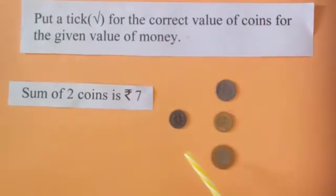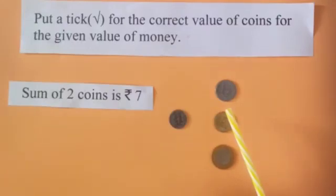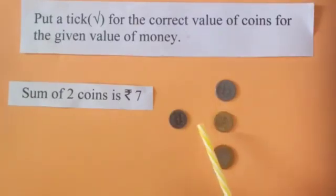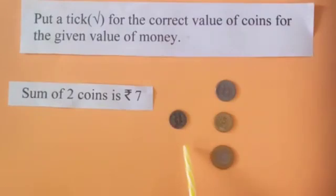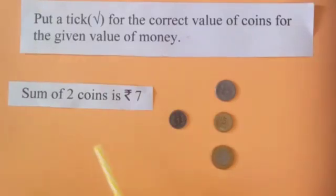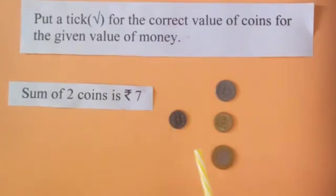We will find the value of other coins along with 1 rupee coin, one by one, and see which 2 coins make the value of rupees 7. What is the value of 1 rupee coin and 2 rupee coin? It is rupees 3. What will be the value of 1 rupee coin and 5 rupee coin? It is rupees 6. Find the value of 1 rupee coin and 10 rupee coin — it is rupees 11. We want the total value of rupees 7, but we did not find it here.